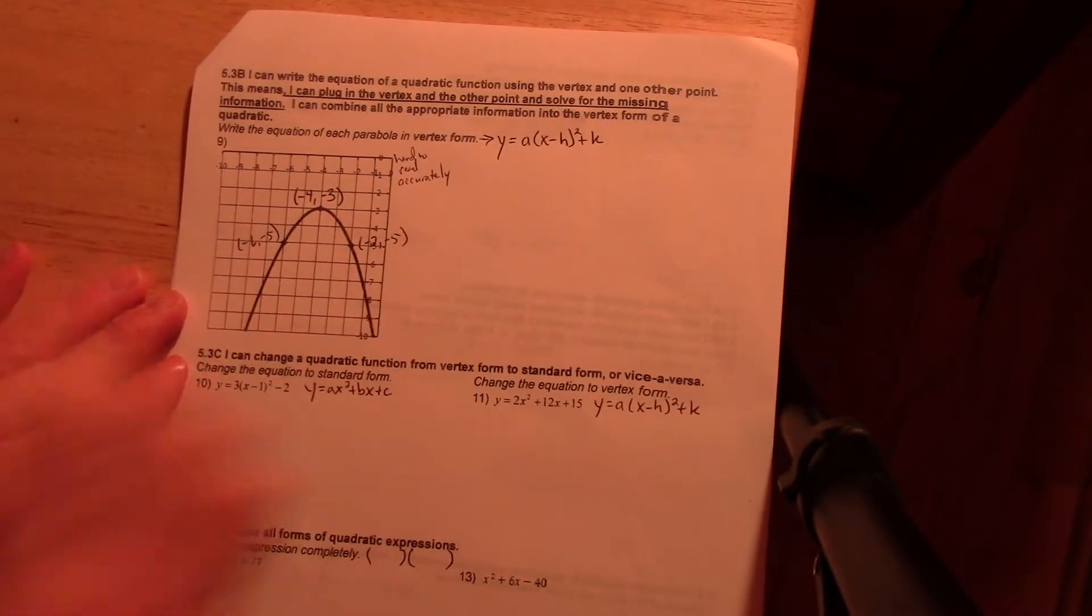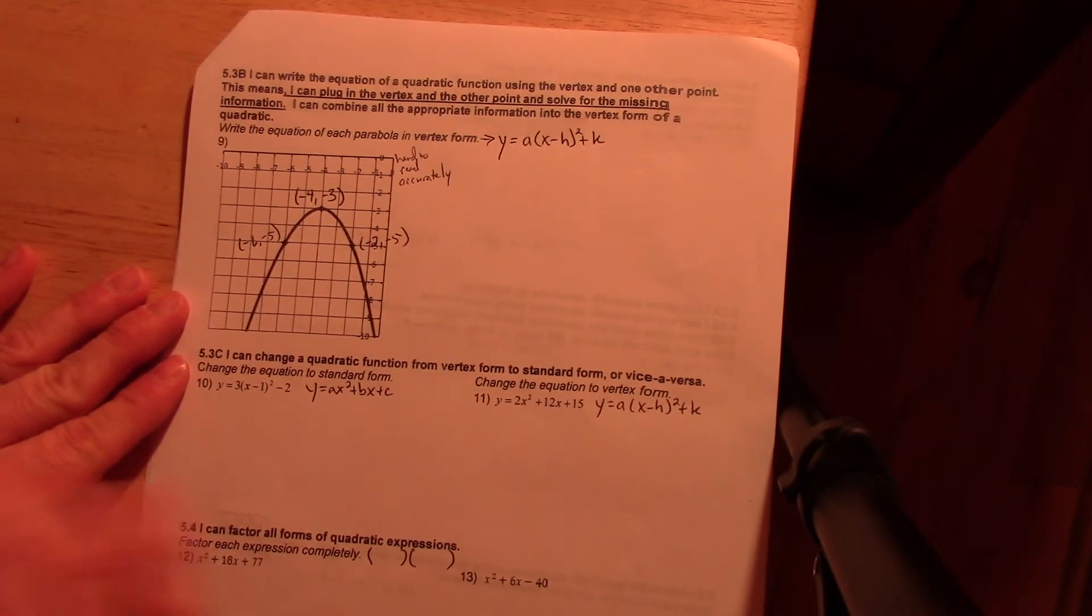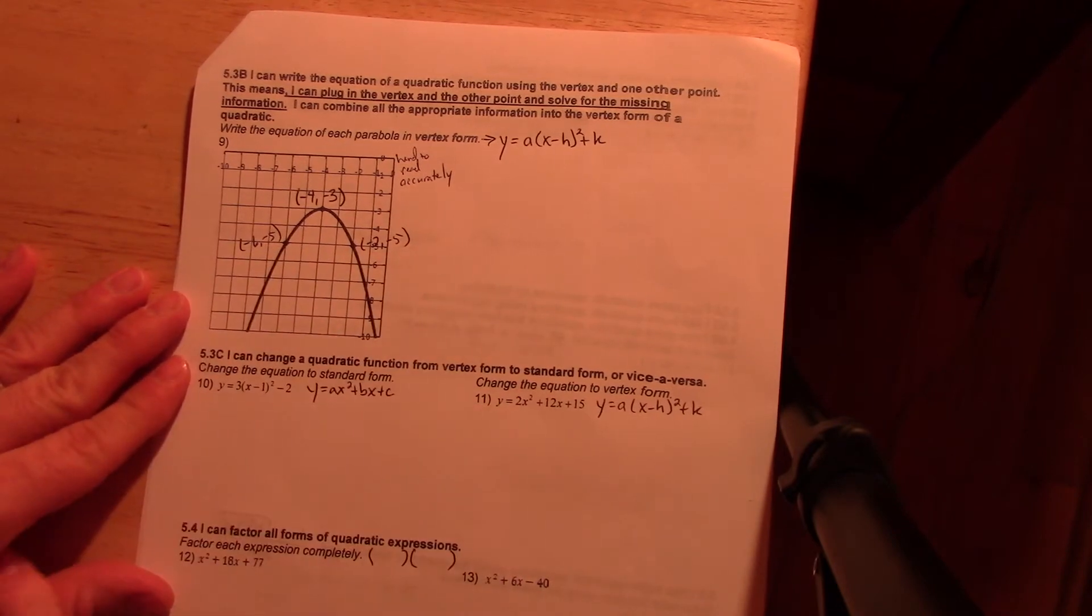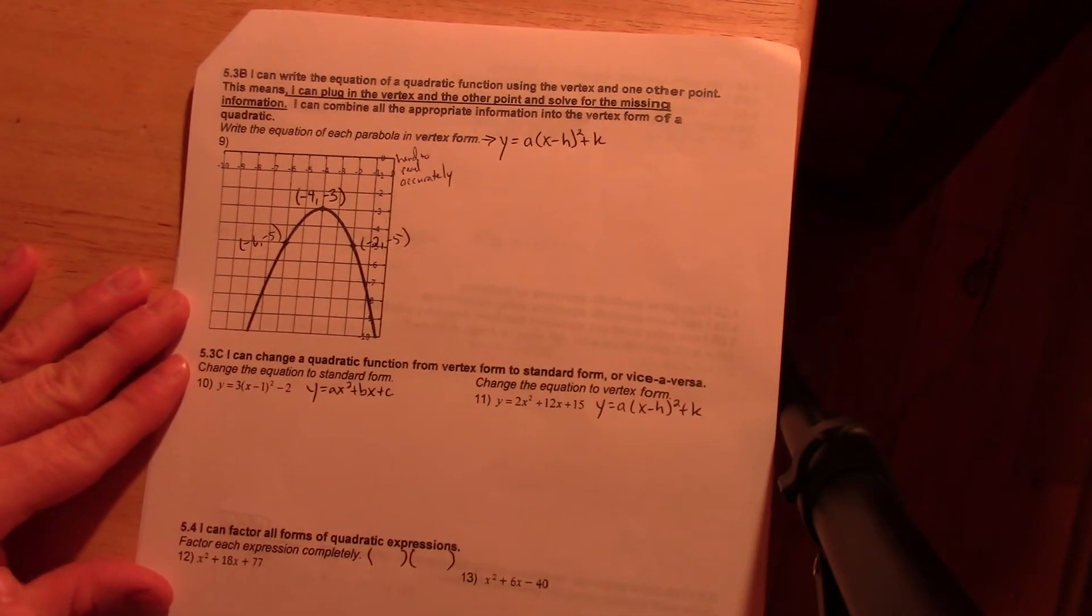Up at the top here, you can see the vertex form, what it is, and then it's kind of hard to read accurately so I labeled my three points here a second just so you can see them. We'll get back to that shortly.